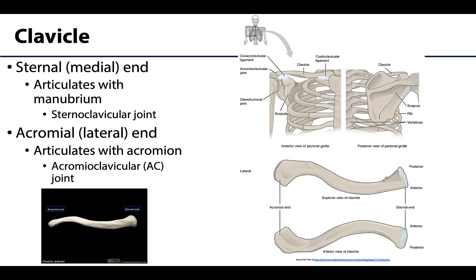Returning to the superior most portions of the upper limb bones, that is the pectoral girdle. This is how we have a connection from the thorax to the upper limb. We discussed something similar with the pelvic girdle, where the hip bones articulate with the sacrum. The clavicle and scapula are not directly articulating with the vertebral column, but the clavicle articulates directly and the scapula indirectly with the thoracic cage.